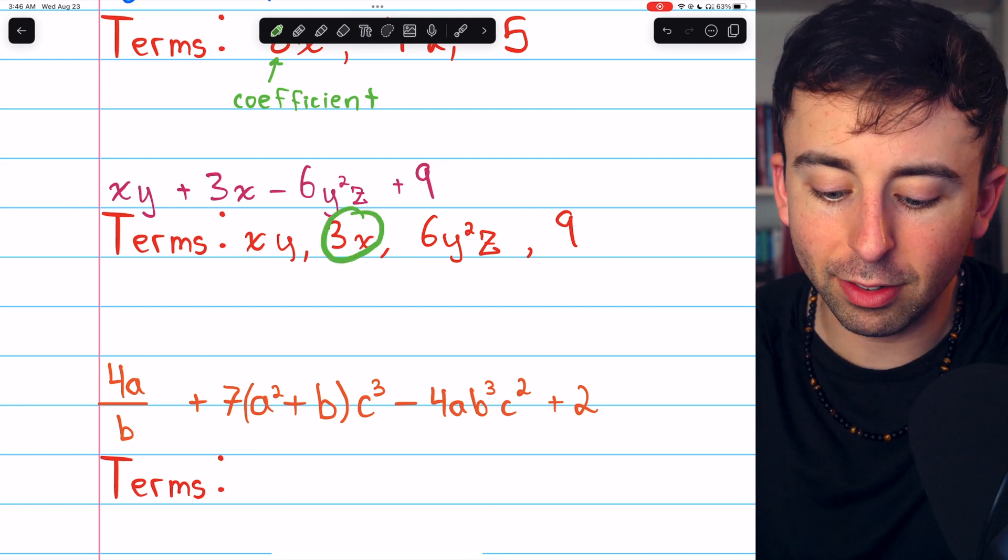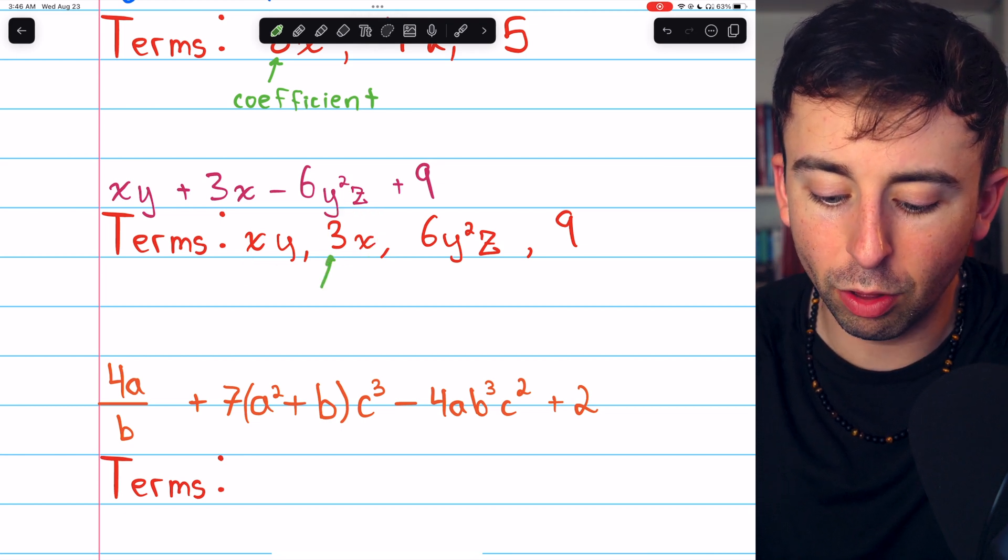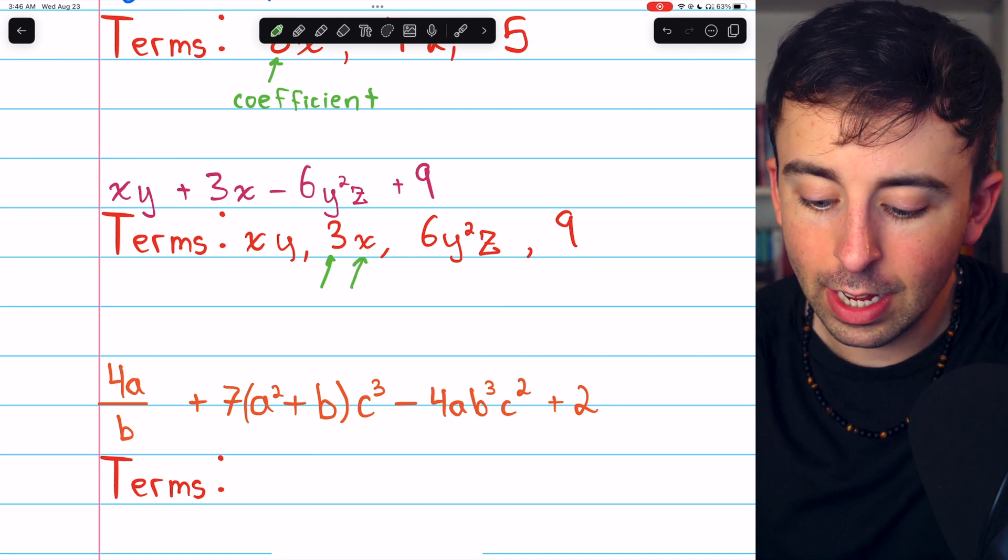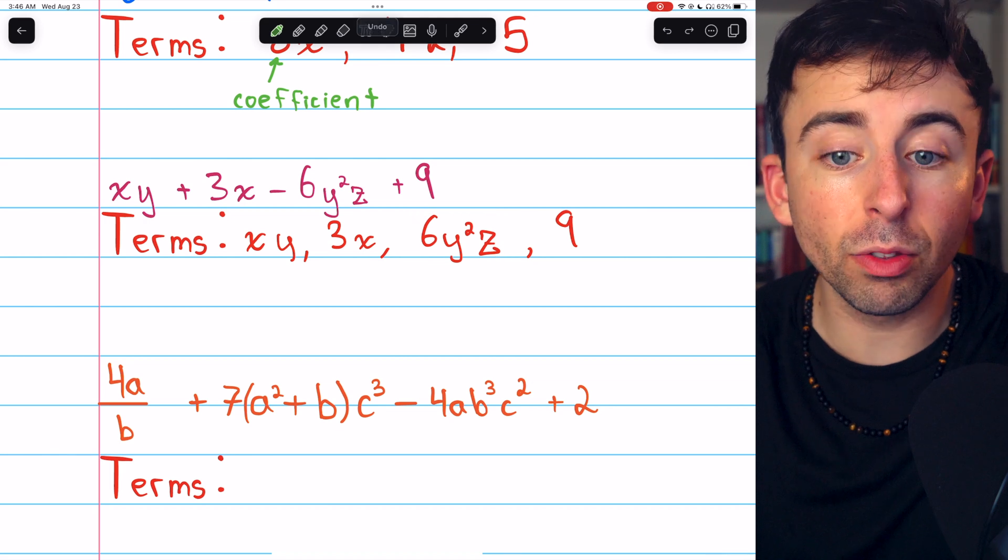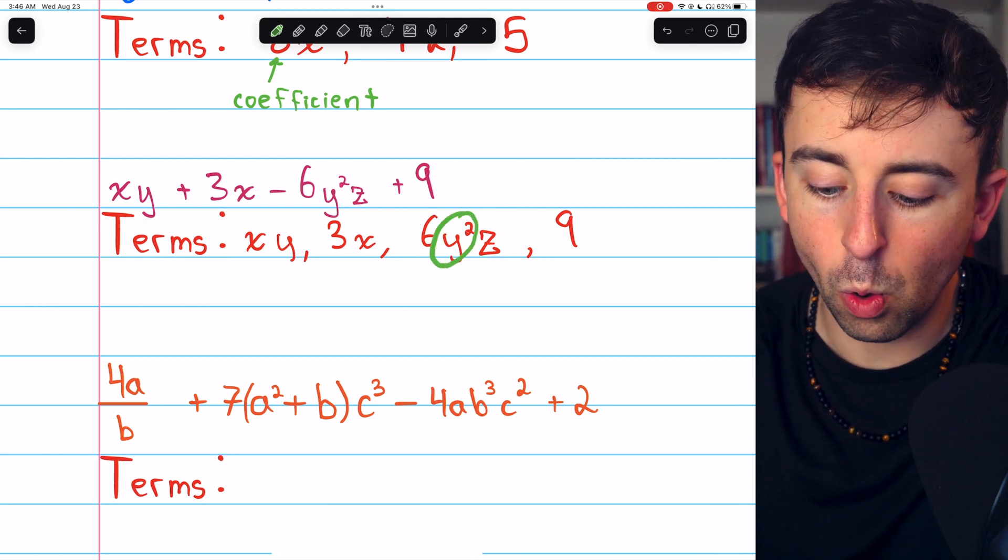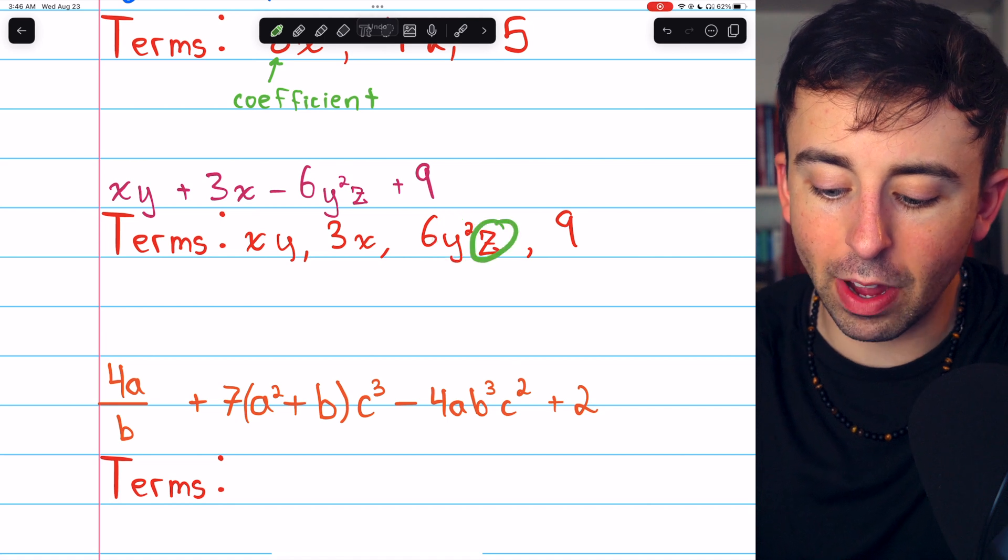The term 3x has two factors, the coefficient 3 and the variable it's getting multiplied by, x. The term 6y squared z has three factors, the coefficient 6, the variable y squared, and the variable z.